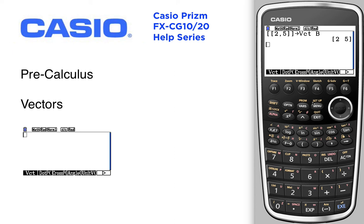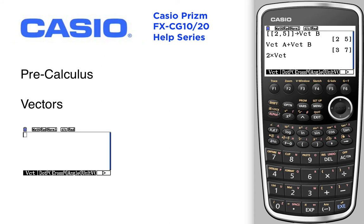So those are stored in A and B, so I can take vector A plus vector B. Remember you can't multiply the vectors because these two vectors have different dimensions. But you can scale — for example, 2 times vector B — you can do that. Those are some basics.